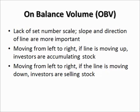Here are some more defined characteristics of the on balance volume technical analysis tool. The first thing you'll notice is that there is a lack of a specific number scale — the slope and direction of the line are more important. Unlike the relative strength index, which is always on a scale of 0 to 100, the on balance volume chart can range from 800,000 to 10 million, or from minus 500,000 to plus 20 million. That's not the most important aspect; the most important thing is to get the slope right.